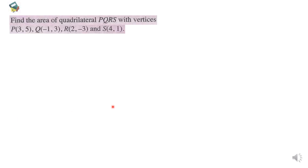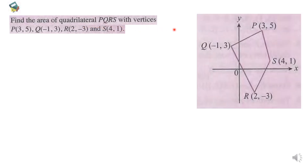Let's look into an example. Find the area of quadrilateral PQRS with vertices P(3,5), Q(1,3), R(2,-3), and S(4,1).